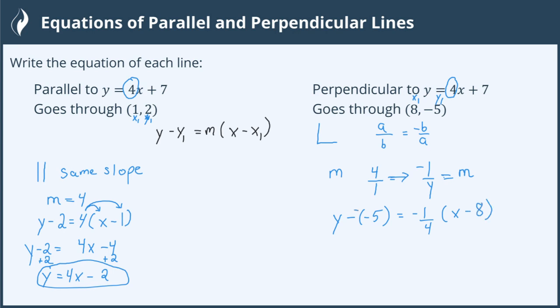With this double negative here, a negative times a negative is a positive. This becomes y plus 5. And we share the negative 1 fourth with everything in the parentheses. Being very careful with that negative. Negative 1 fourth times x is negative 1 fourth x. Negative 1 fourth times 8 is negative 1 times negative 8, which is 8, over 4, which becomes a positive 2.